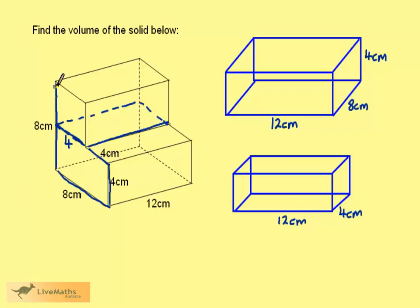This distance here is 8 and this distance is 4, leaving the height as 4. We can now work out the volume for each cuboid.